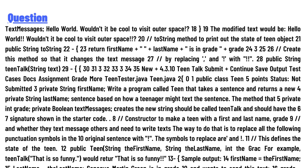The modified text would be: 'hello world would not it be cool to visit outer space'. Implement the toString method to print out the state of the Teen object. The return statement should read: first name, last name, is in grade, grade. Create this method to show that it changes the text message.